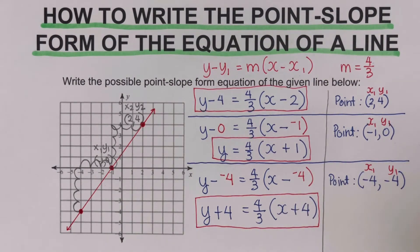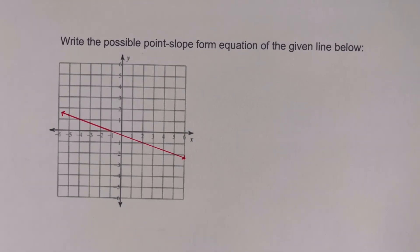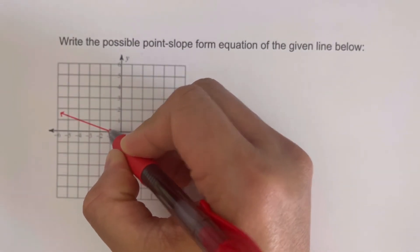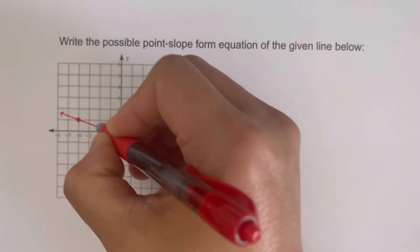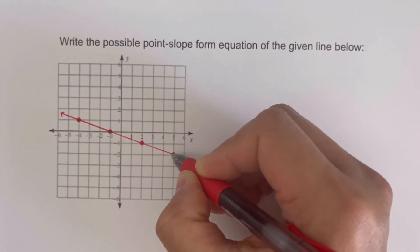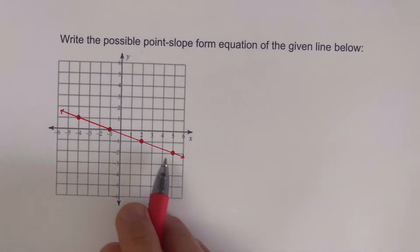Now let's move on to the next example. In this example there are no dots given to us. To write an equation in point-slope form, we are going to pick lattice points — those with coordinates in integer form. The first lattice point could be here, then tracing along the line we identify additional lattice points. We can create more lattice points by extending the line.